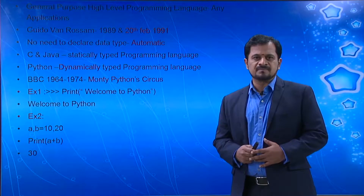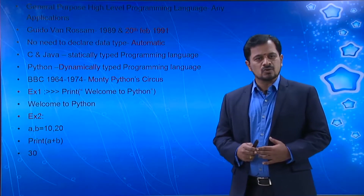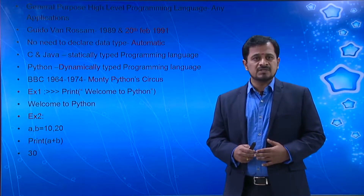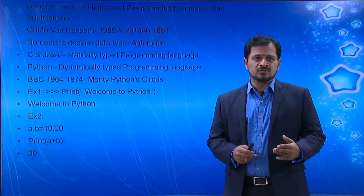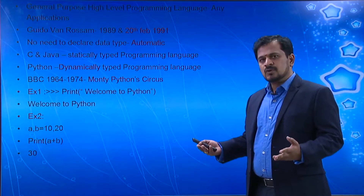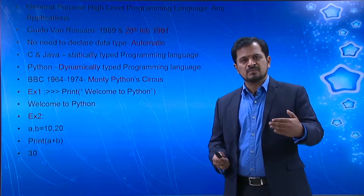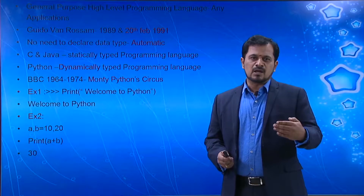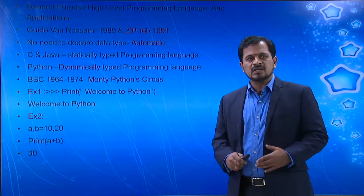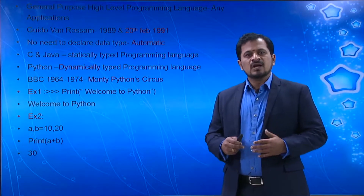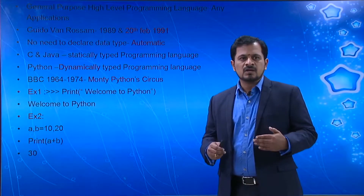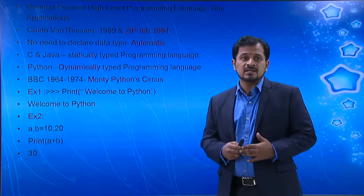We can develop any kind of applications. The father of Python is Guido Van Rossum, who invented the Python programming language in the year 1989, but it was officially declared in the year 1991 on 20th February. One of the major advantages is we need not declare any data types. The system itself will automatically understand whether data belongs to integer, float, or any other type — so errors are dramatically reduced. C and Java are statically typed programming languages, whereas Python is a dynamically typed programming language.